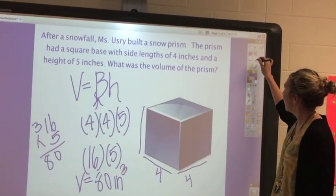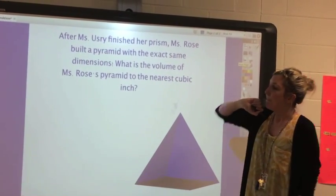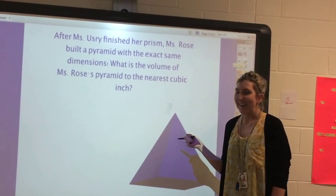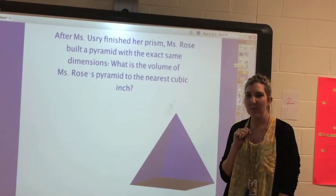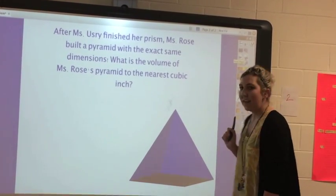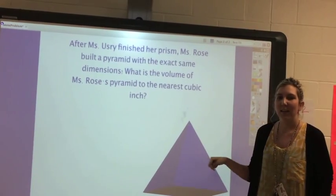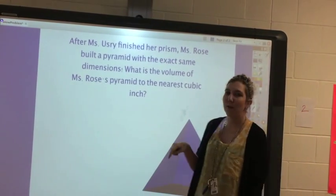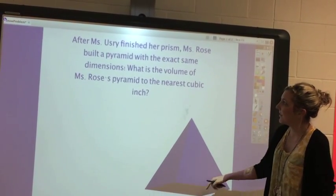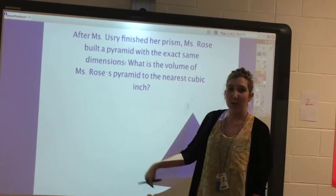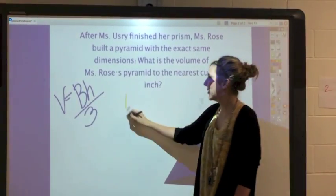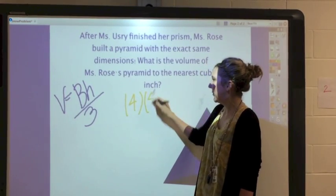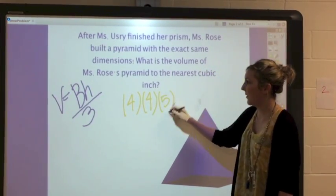So after Miss Estrey built our prism, Miss Rose went and built a pyramid with the exact same dimensions. What are dimensions? I can't remember. Hmm, I think that might be the length, the width, and the height. So for length and width, I'm going to look at my base, and that would be what our square was. Our square to find the area of the base times our height, that was our four times four times five, which we found gave us eighty.